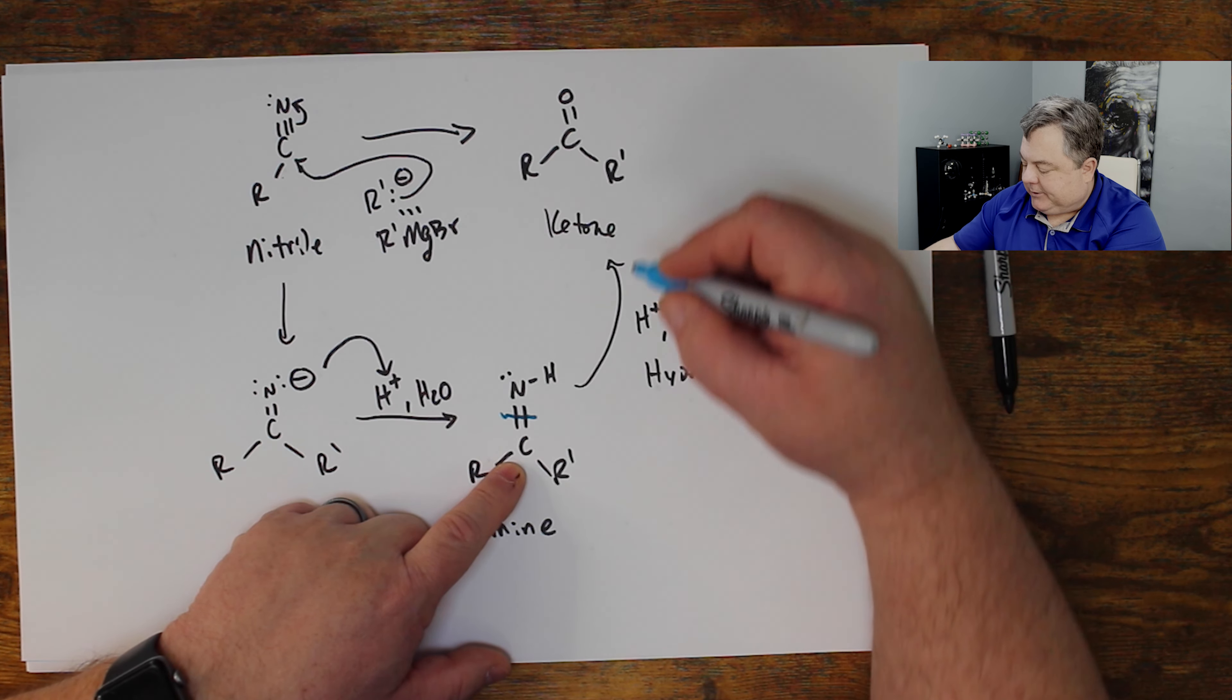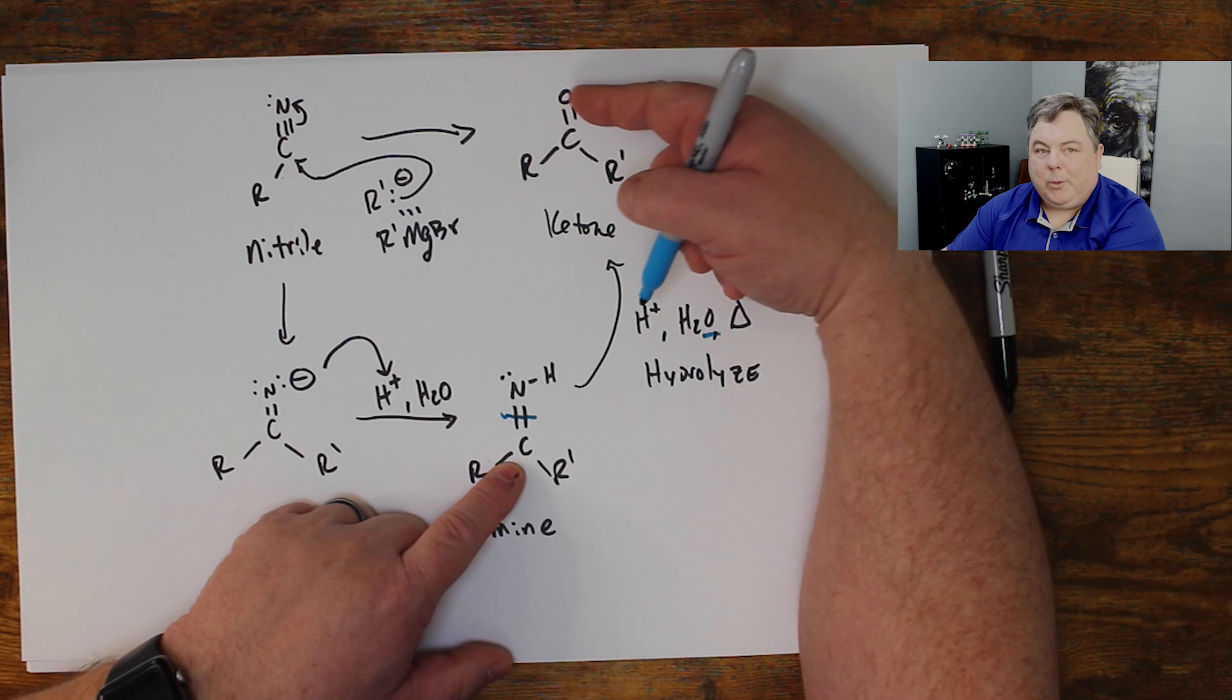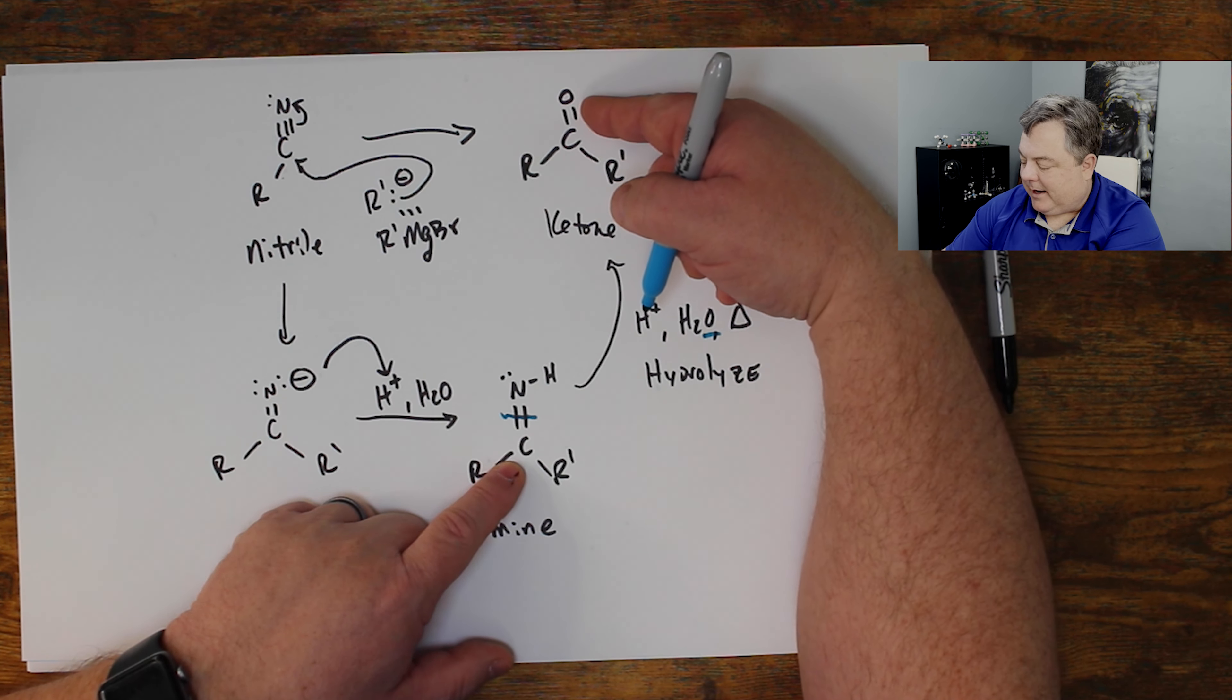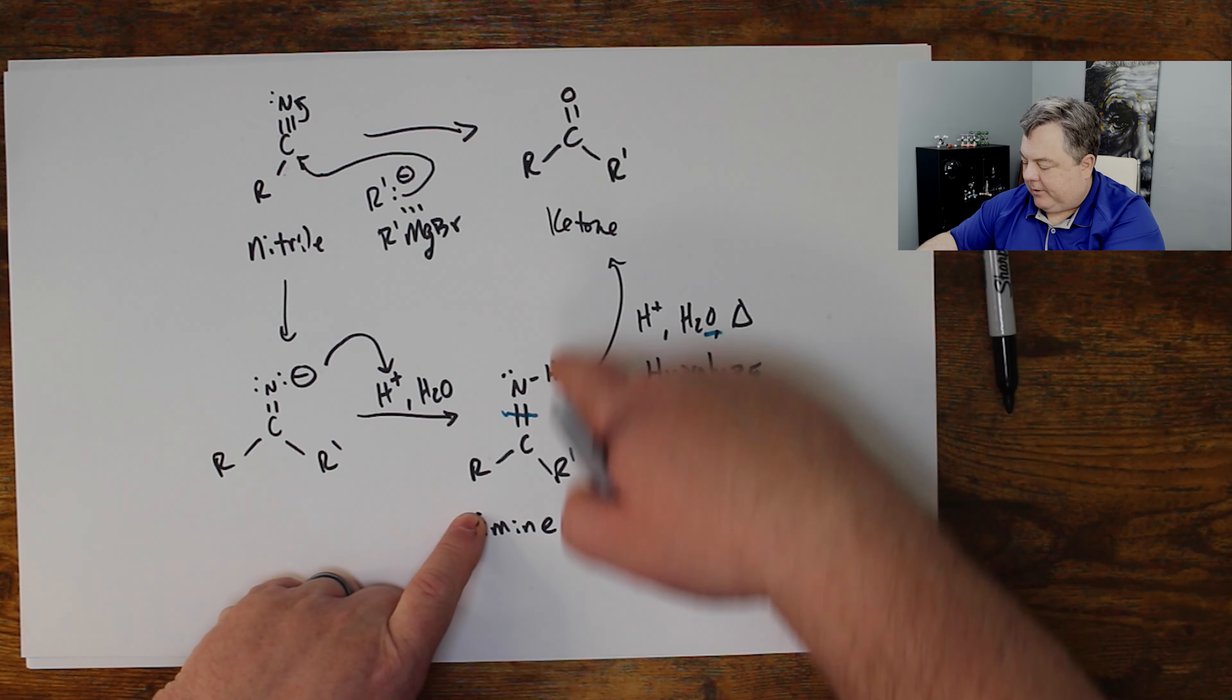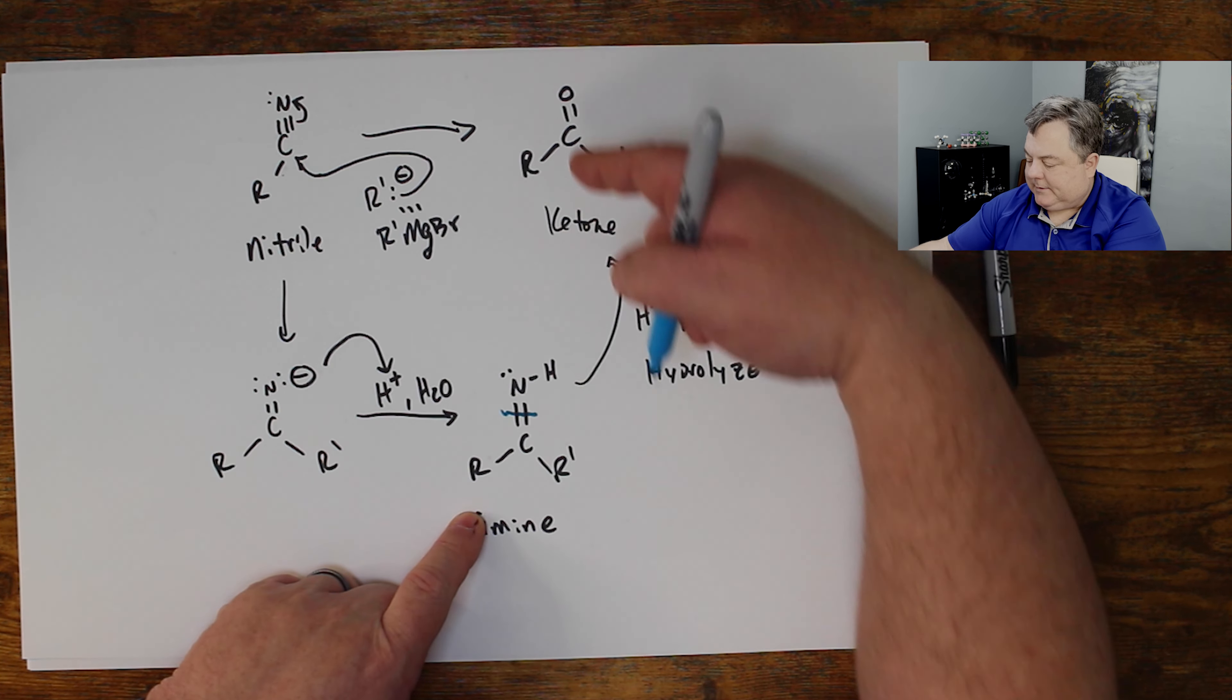And it becomes two bonds, carbon double bond oxygen. So imines are hidden ketones if you hydrolyze them. Two bonds to two bonds.